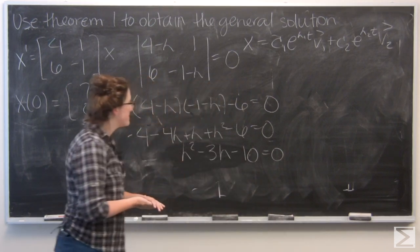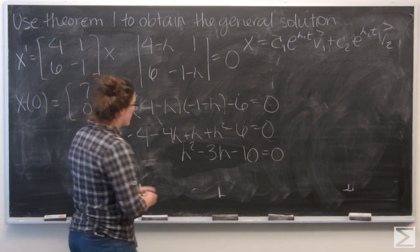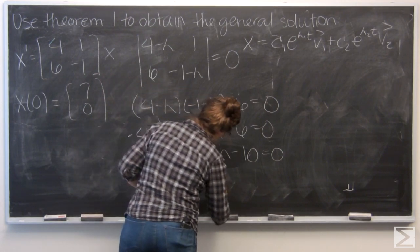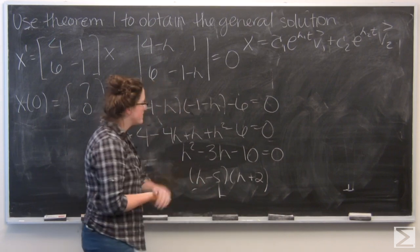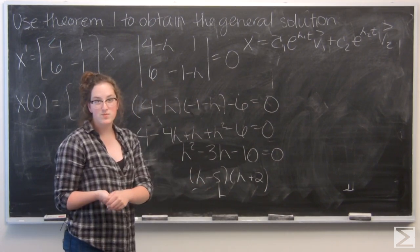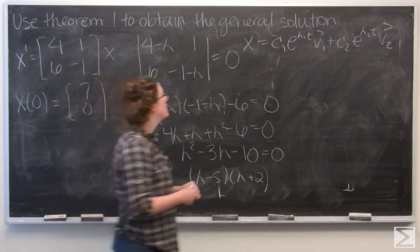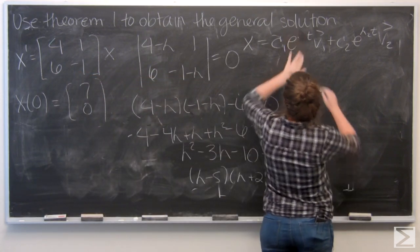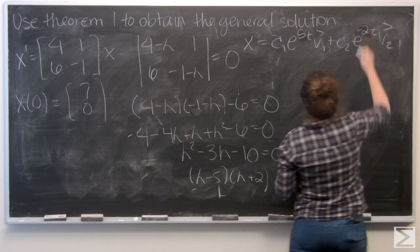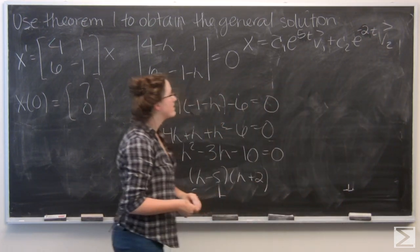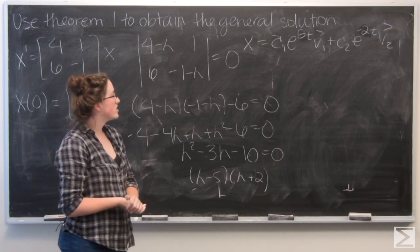So I've got lambda squared minus 3 lambda minus 10 equals 0. That means I can factor to lambda minus 5 and lambda plus 2. So my two eigenvalues are 5 and negative 2. I'm going to put those in so that I will have them for later. And now I just want to find the eigenvectors for each of those.